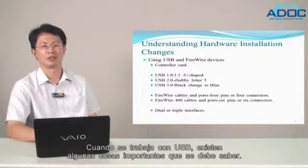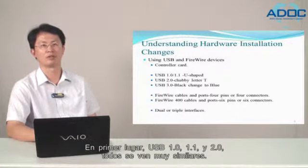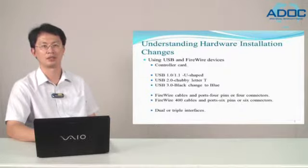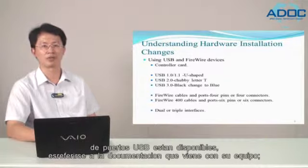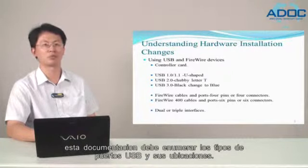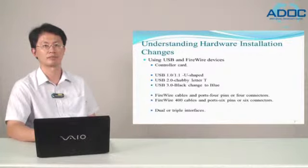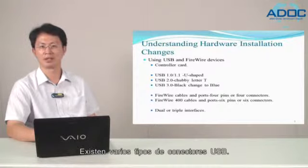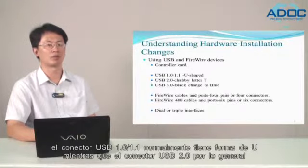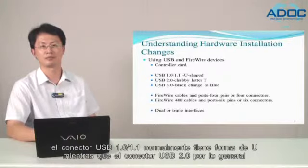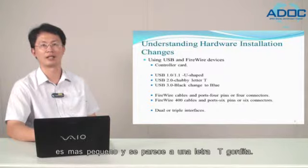When working with USB, there are some important things to know. USB 1.0, 1.1, and 2.0 ports all look very similar. The best way to determine which types of USB ports are available on your computer is to refer to the documentation that came with it. This documentation should list the types of USB ports and their locations. There are also several different types of USB connectors — for example, the USB 1.1 connector is typically U-shaped, while the USB 2.0 connector is typically smaller.